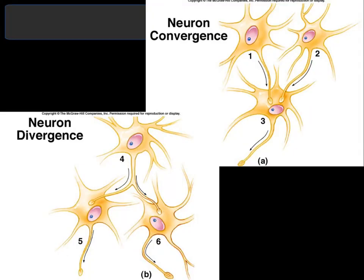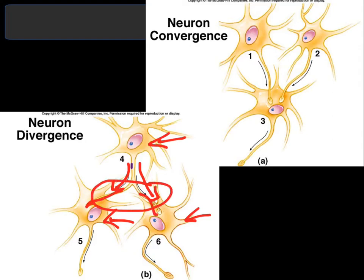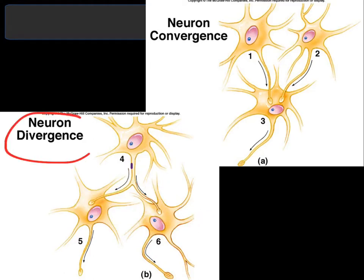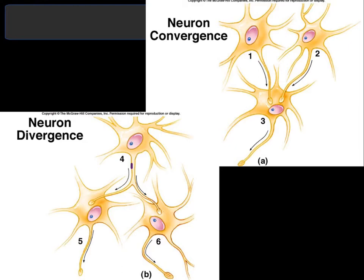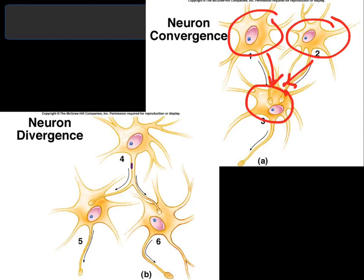There are two types of synaptic connections. In a divergent neuron, one presynaptic neuron branches and sends its signal to two or more postsynaptic neurons. In a convergent neuron, two or more presynaptic neurons send their information and converge onto a single postsynaptic neuron. The axon terminal of one neuron connects with the dendrites of the next.